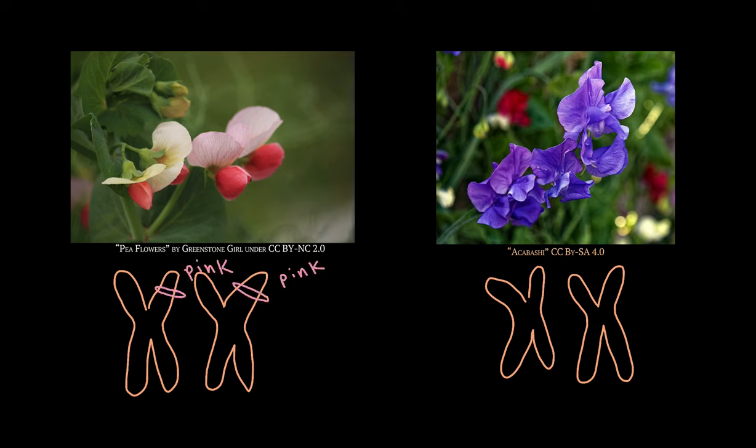A single pea plant may have two copies of the pink allele, two copies of the purple allele, or one copy of each. The color of flowers that the pea plants end up with depends on how the alleles interact, but we'll cover that in another video.